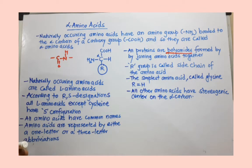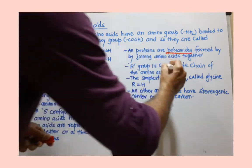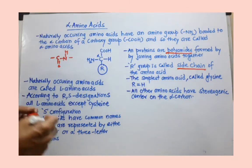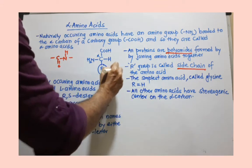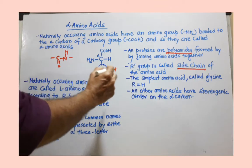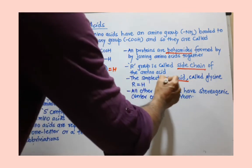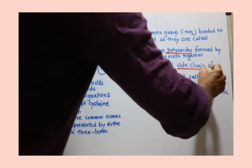The R group is called the side chain. In the simplest form, when R equals H, we have the simplest amino acid, which is called glycine.